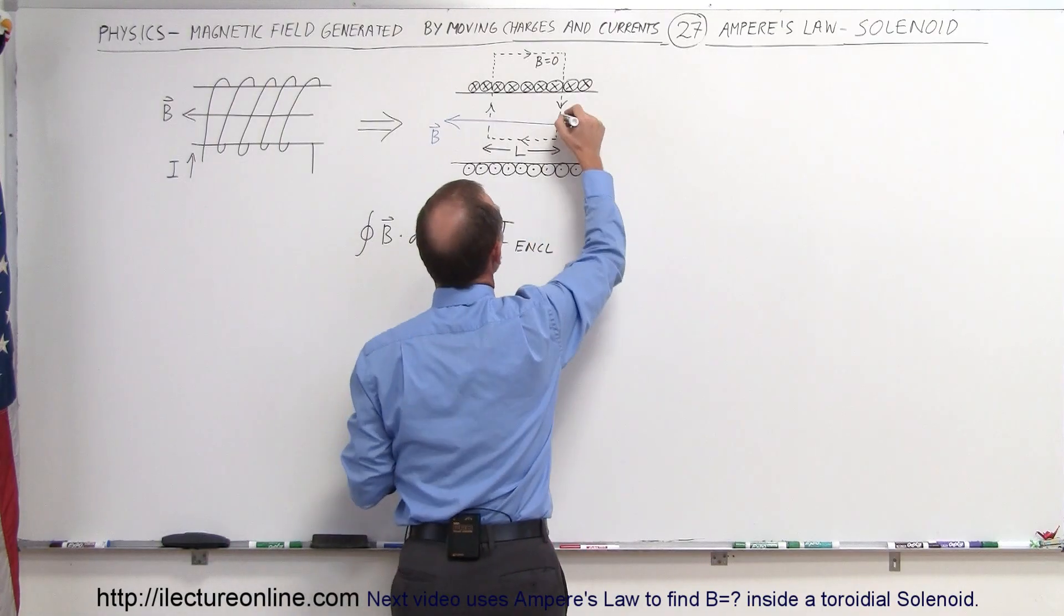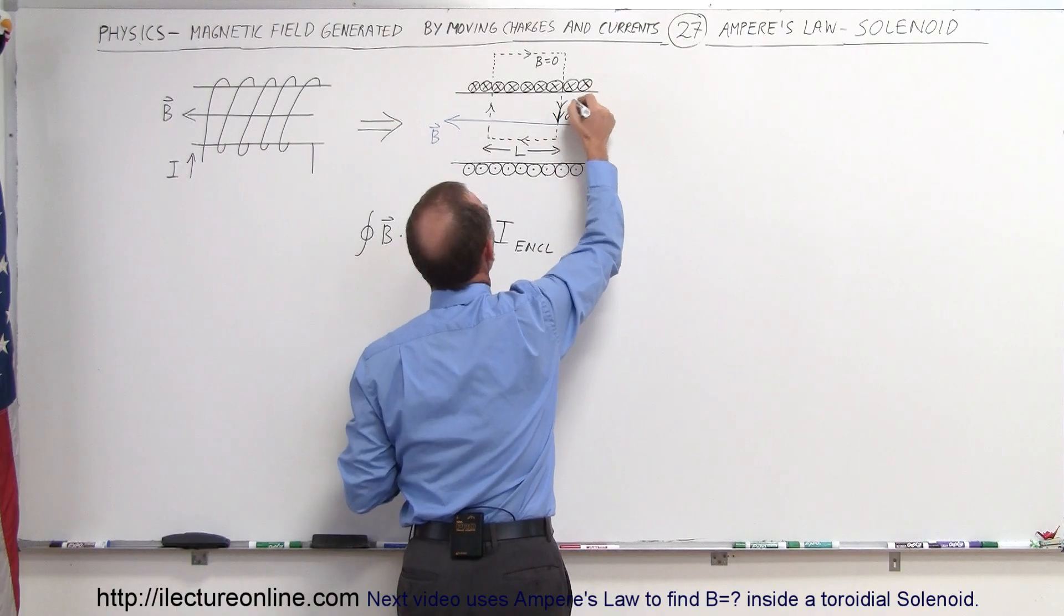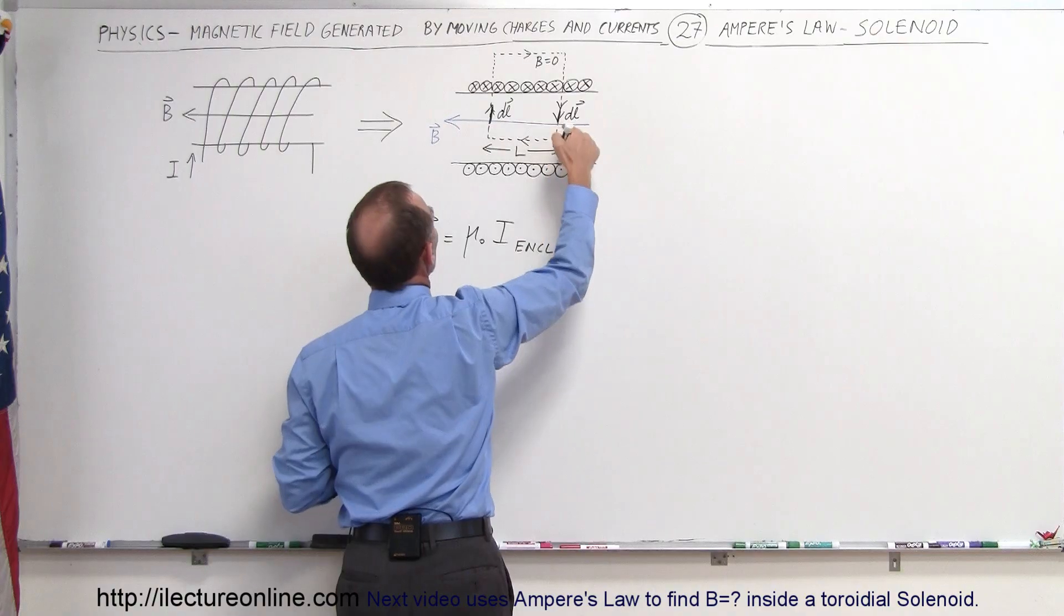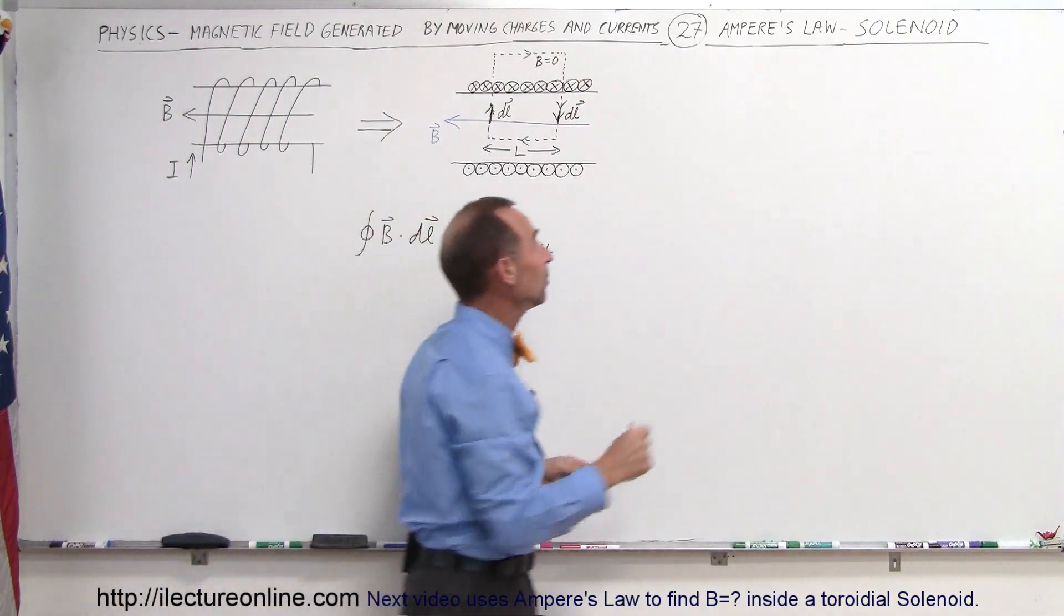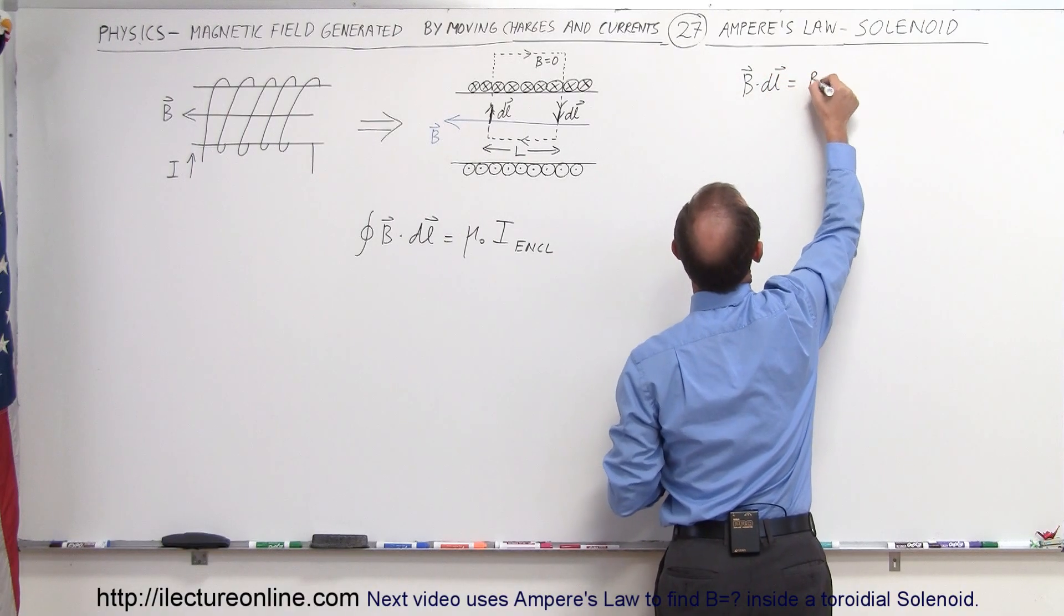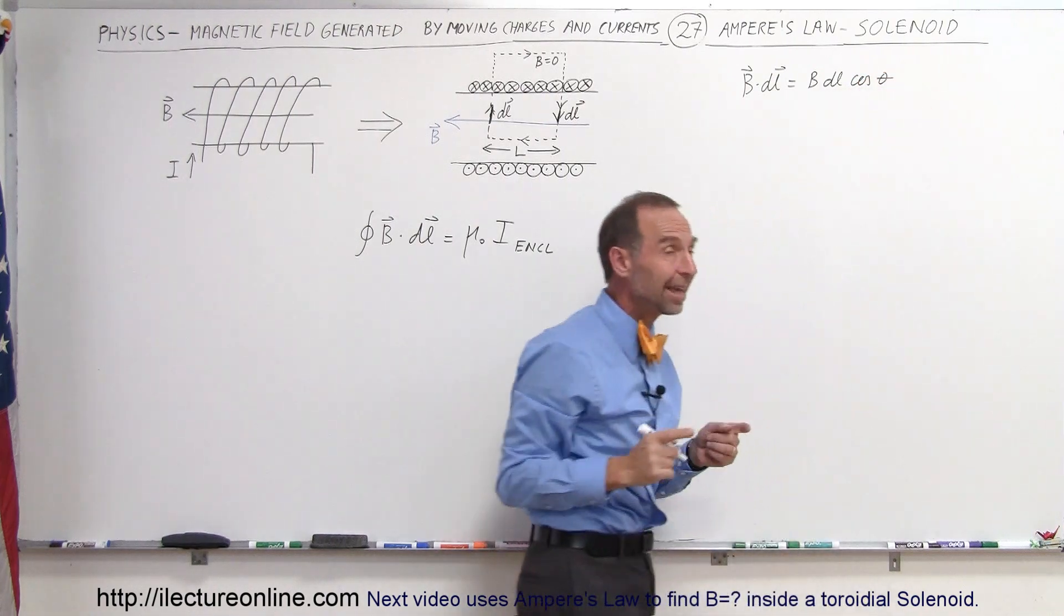So the dL, which would be in this direction over here, and the dL over here would be in this direction. Notice that the dL and the magnetic field are perpendicular to each other. And remember that B dot dL is equal to B times dL times the cosine of the angle between them.